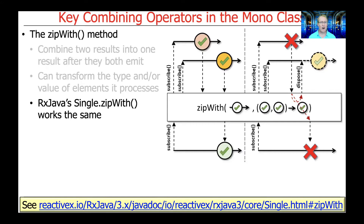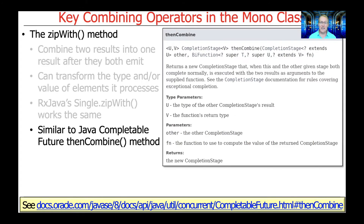There's a similar method that's part of RxJava's Single class called ZipWith — same name, same behavior. We'll talk about that when we talk about Singles in RxJava later. These methods are also very similar to Java's CompletableFuture method called thenCombine, which can be used to combine two different CompletableFutures when they complete. Very much the same idea, very much the same syntax and use case.